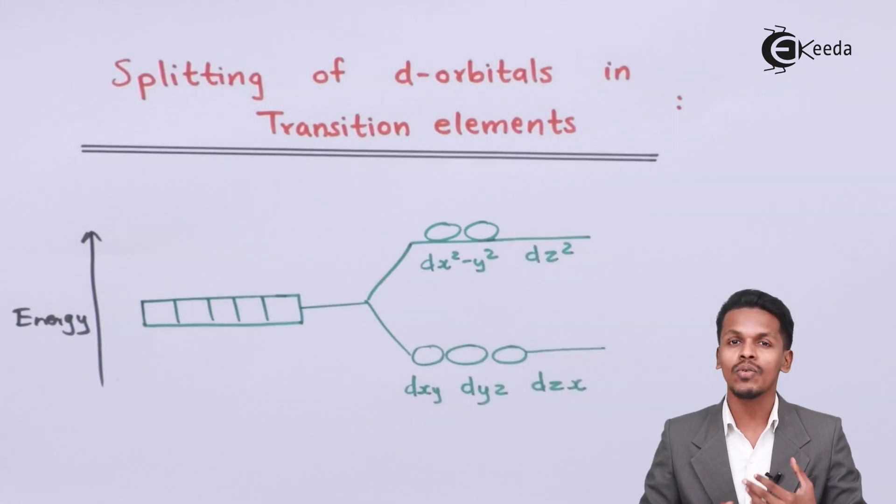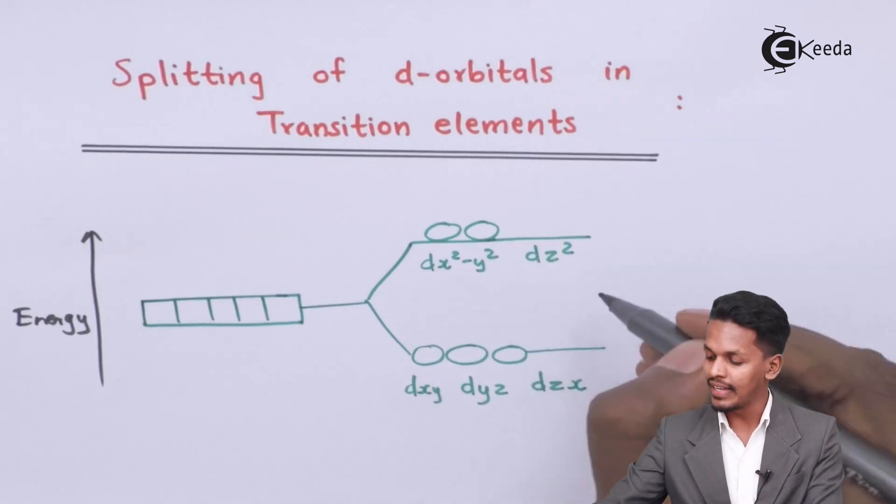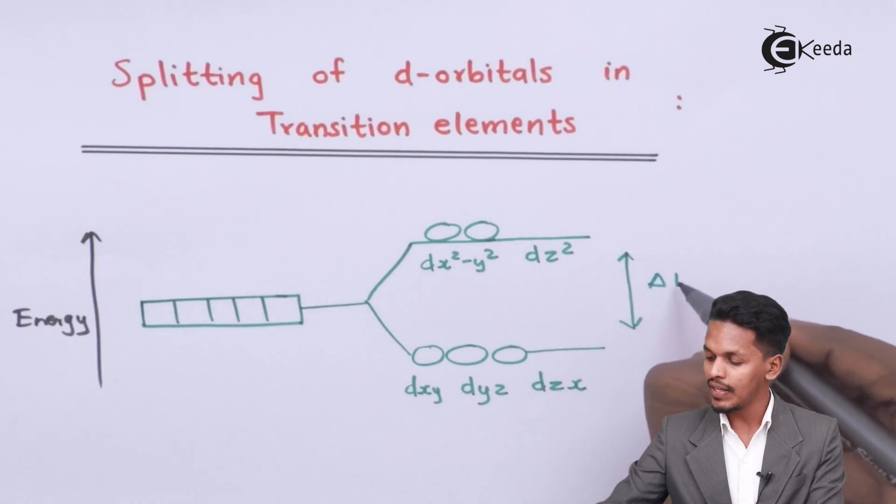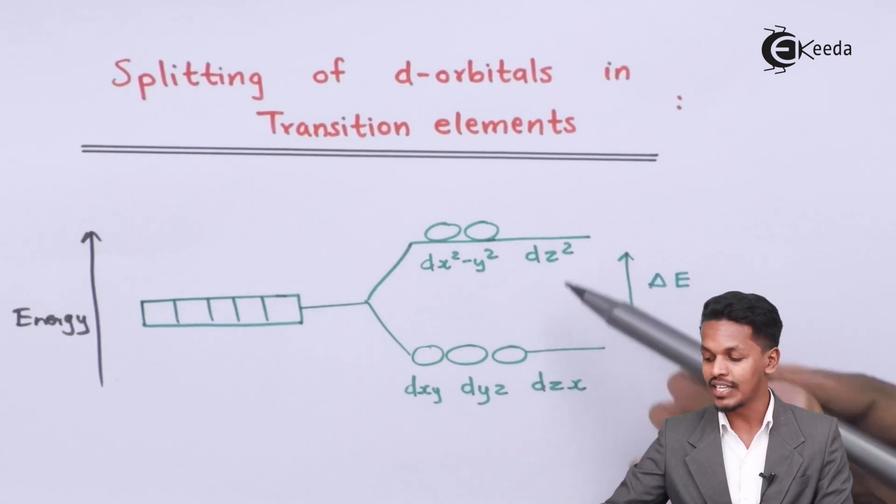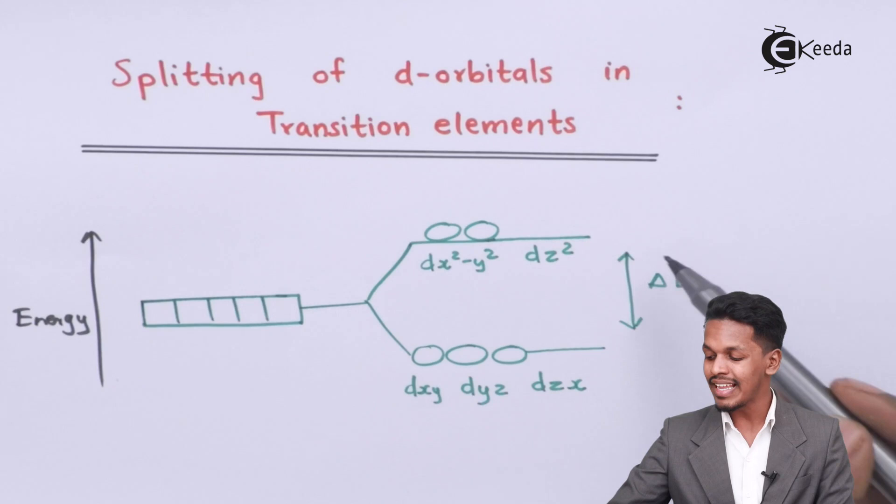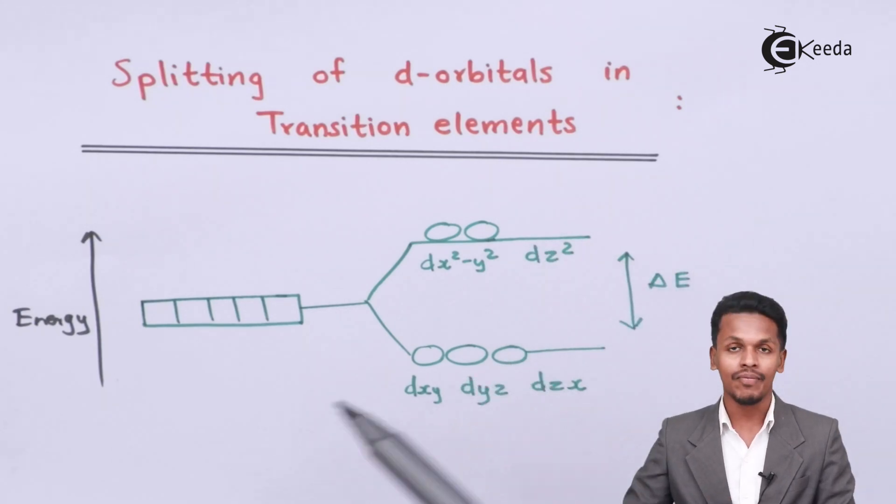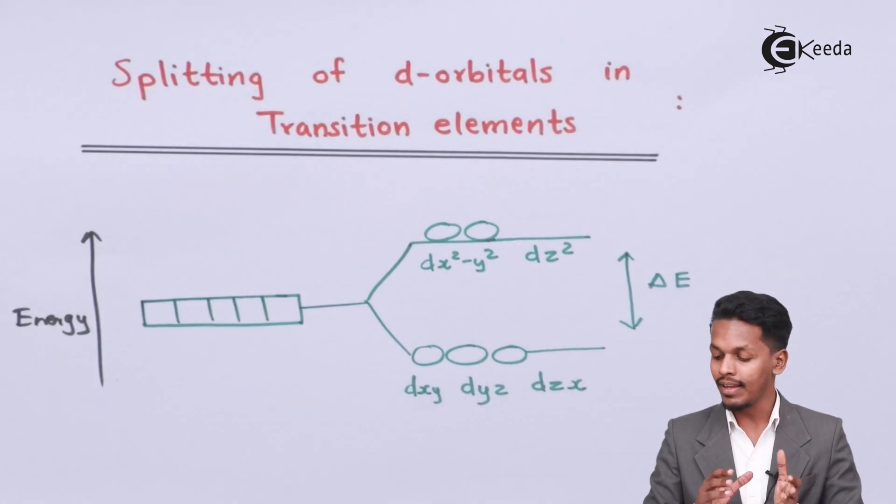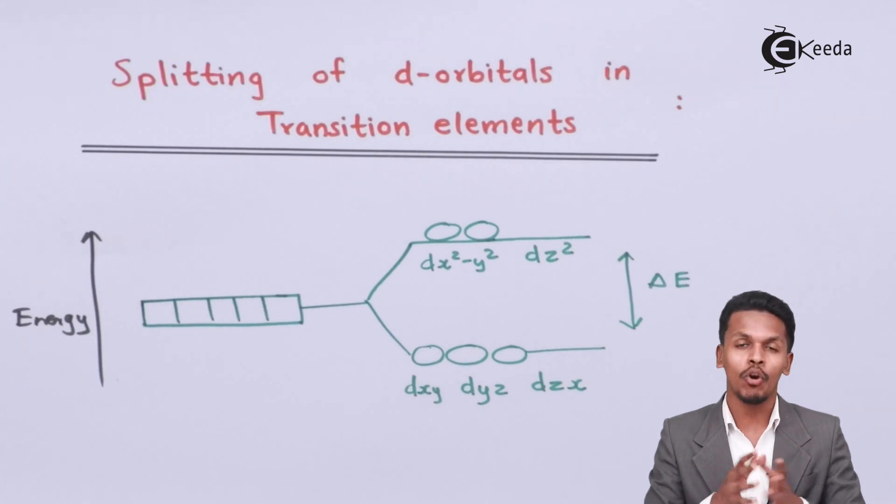This kind of splitting is known as crystal field splitting, and this is the change or transition energy that we can see here. This energy level is very small when compared to when a group is approaching the d orbital.